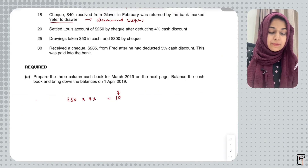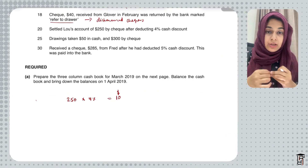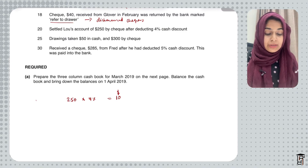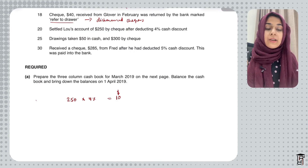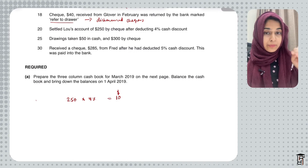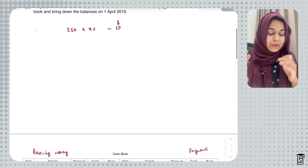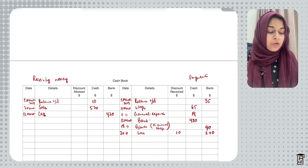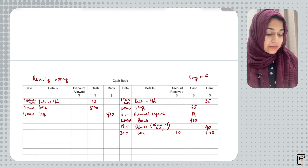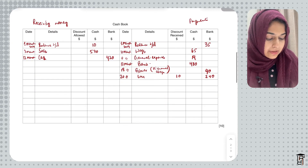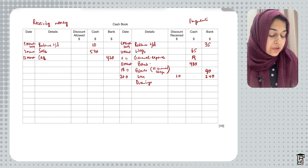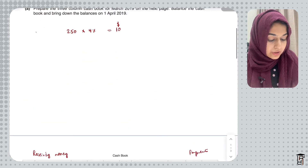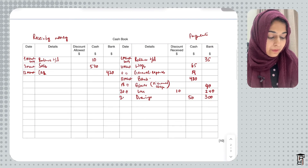On 25th March, drawings: Wilson takes $50 in cash and $300 by check for personal use. Both accounts are paying accounts, so I write drawings on the credit side — $50 in the cash column and $300 in the bank column.